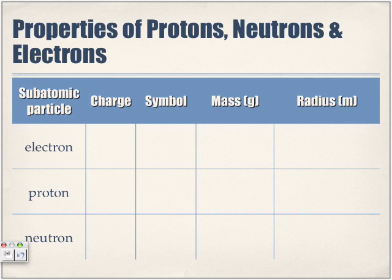Looking at the properties of protons, neutrons, and electrons: the electron has a charge of negative one, and is represented by the symbol e⁻. Its mass is 9.02 × 10⁻²⁸ grams — an extremely small number with many zeros after the decimal. This is why grams is not really the best unit to use for subatomic particle masses.